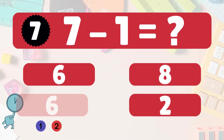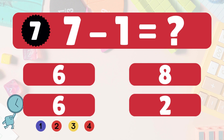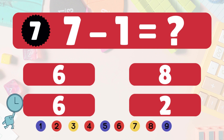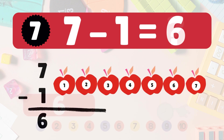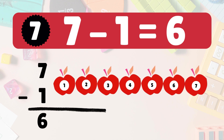Next: 7 minus 1 equals what? 7 minus 1 is 6. Here we have 7 apples. Take 1 away. 6 apples left: 1, 2, 3, 4, 5, 6. So 7 minus 1 is 6. You're getting it!